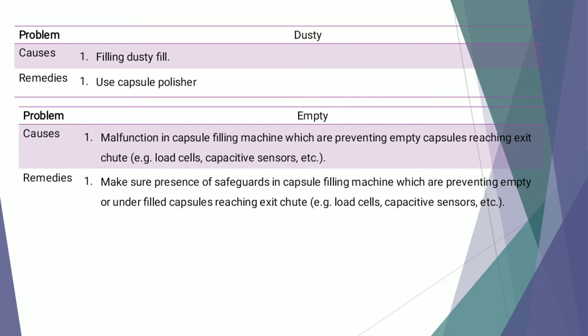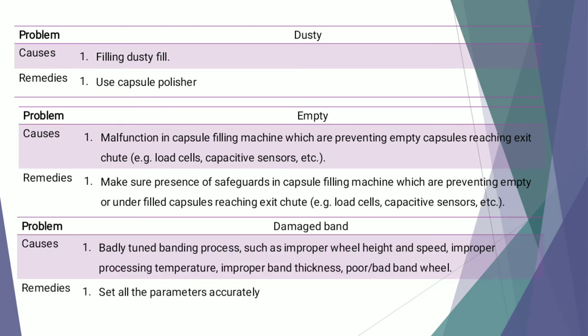The remedy for empty capsules is to make sure safeguards are present in the capsule filling machine to prevent empty or underfilled capsules from reaching the exit chute. The next defect is damaged band, caused by a badly tuned banding process such as improper wheel height and speed, improper processing temperature, improper band thickness, and poor or bad band wheel. All parameters should be checked regularly to ensure they are working correctly and smoothly.